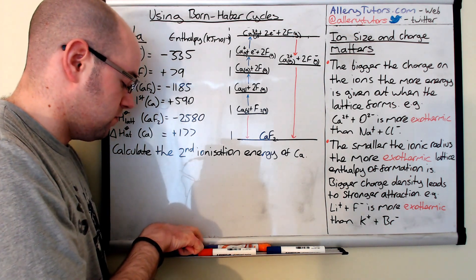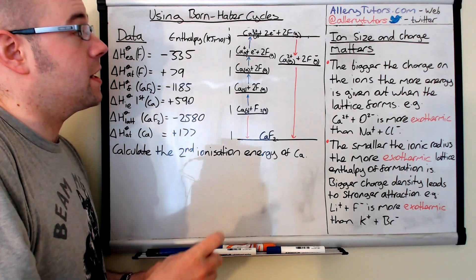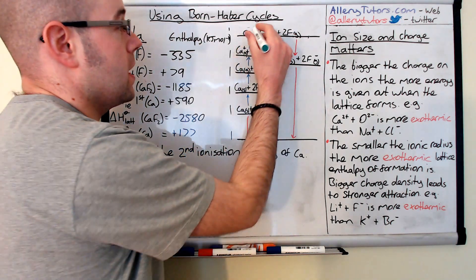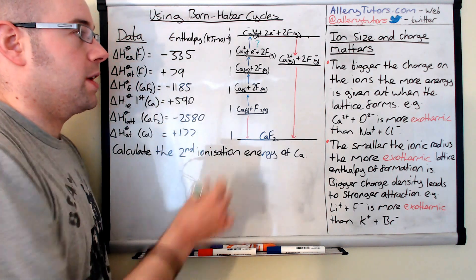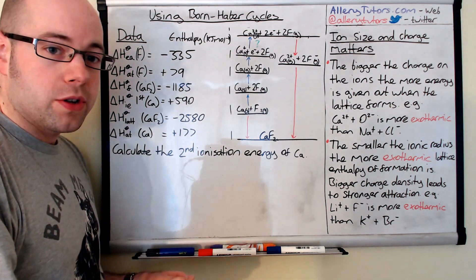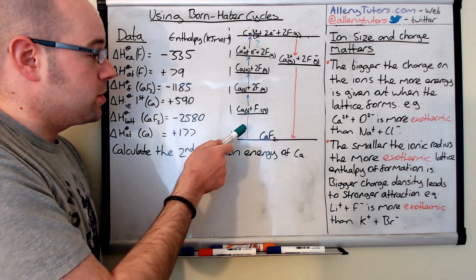So the second ionization of calcium is this one here. So this is the enthalpy value that we need to work out which is this gap here. All the other numbers we've got over here. So we're going to start with this one first. We'll start at the bottom.